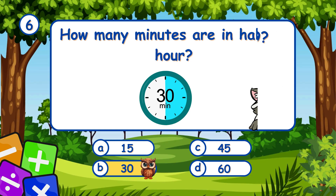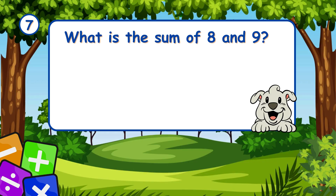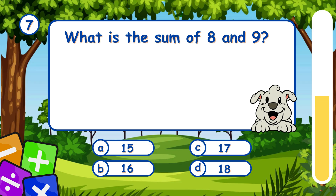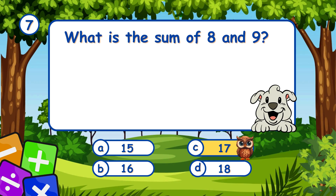What is the sum of 8 and 9? It's C, 17. Adding 8 and 9 gives 17.